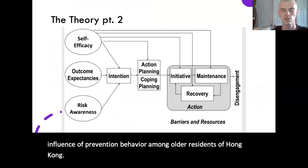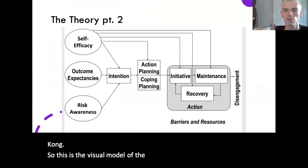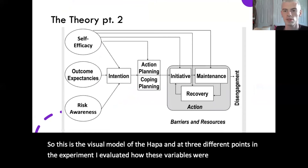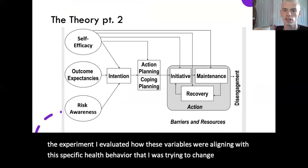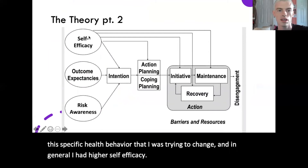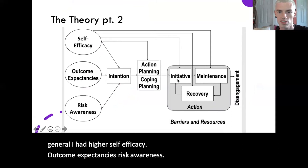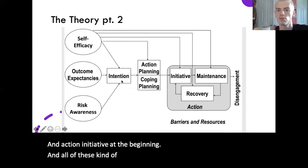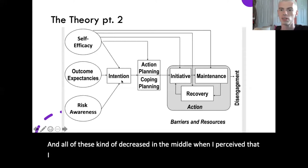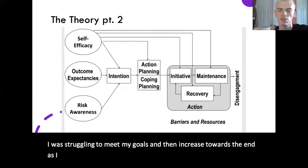This is the visual model of the HAPA. At three different points in the experiment I evaluated how these variables were aligning with the specific health behavior I was trying to change. In general, I had higher self-efficacy, outcome expectancies, risk awareness, and action initiative at the beginning. All of these decreased in the middle when I perceived I was struggling to meet my goals, and then increased towards the end as I was building my recovery self-efficacy.